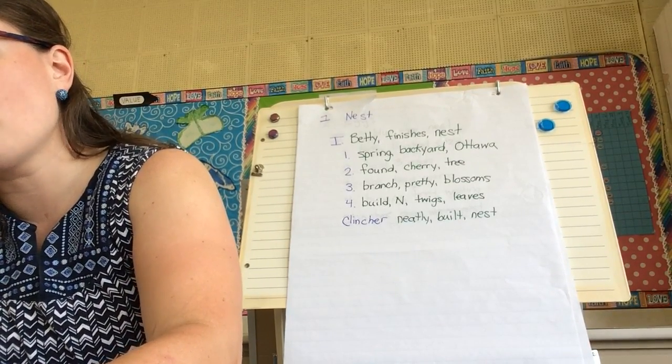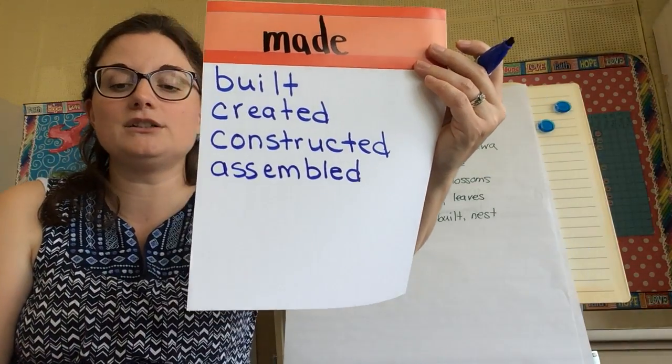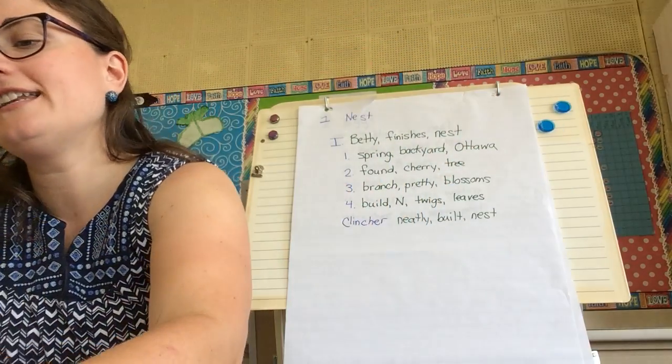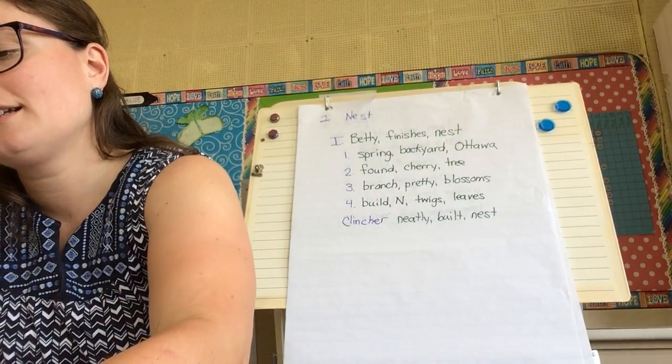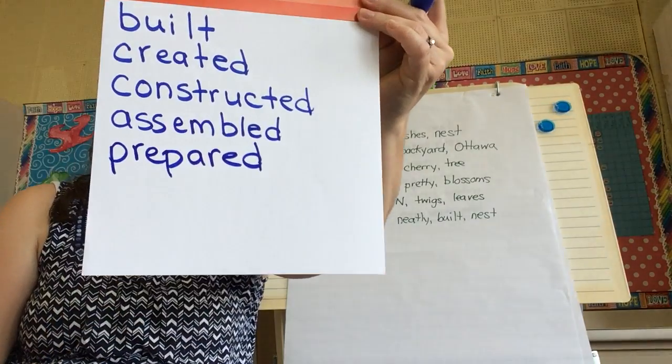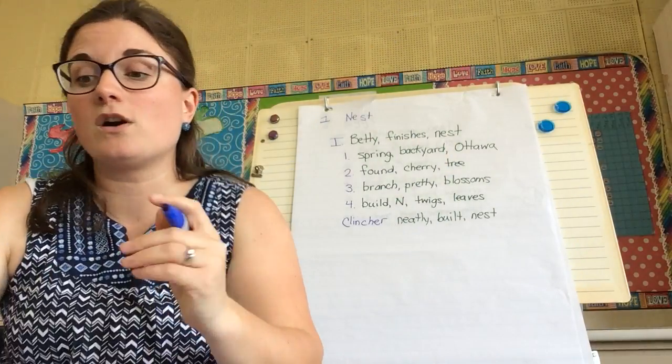So these are all strong verbs. These are actions that Betty's going to do to assemble a nest. She prepared a nest. Kind of like the mom's job right? Prepared a nest. We could say formed a nest.